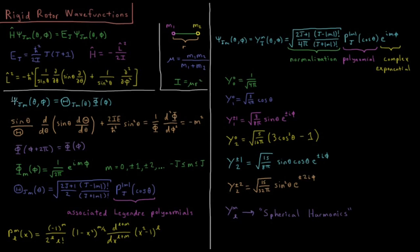So our strategy to solve this is what is always our strategy, separation of variables. Psi jm of theta and phi equals capital theta jm of theta times capital phi of little phi. So we're going to separate it into a function of theta, the polar angle, and phi, the azimuthal angle in spherical polar.